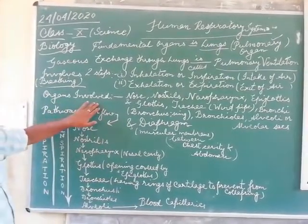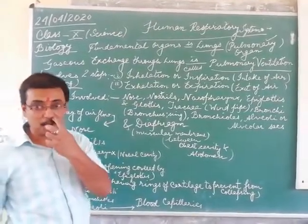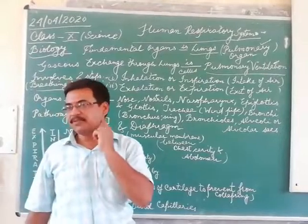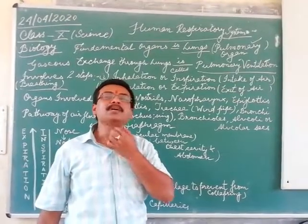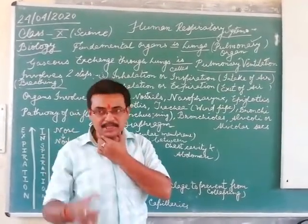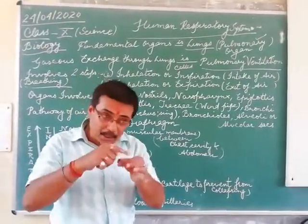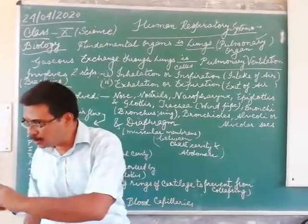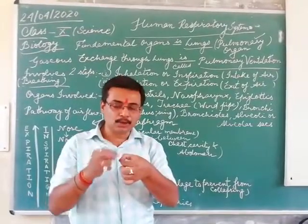The structures involved are: we have the nose, then the openings called nostrils. It goes down into the cavity — we are calling it as nasopharynx. This nasopharynx opens up into a tube. Now this tube we are calling as the trachea. The first opening of the tube is called as glottis.